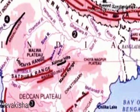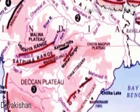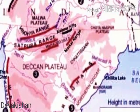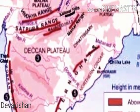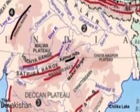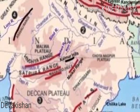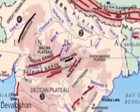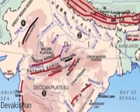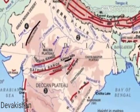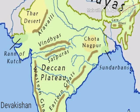To the south of the Gangetic Plains and north of the River Narmada, we can identify the Central Highlands. Prominent plateaus here are the Malwa Plateau on the western side and the Chhota Nagpur Plateau towards the east. The plateau region is dry; the rivers are not perennial, and irrigation for a second crop depends on deep tube wells and tanks. The Chhota Nagpur Plateau is rich in mineral resources.